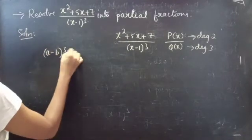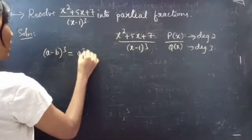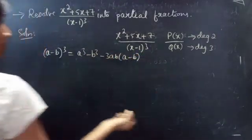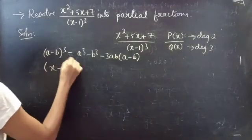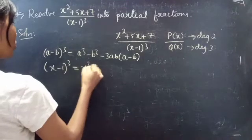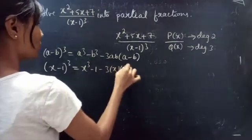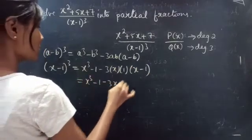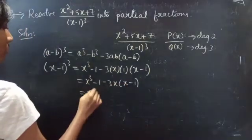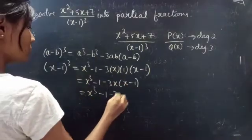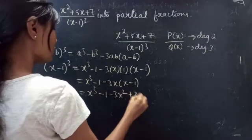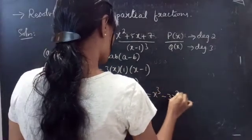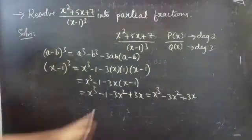If you want, you can check using the formula (a − b)³ = a³ − b³ − 3ab(a − b). So (x − 1)³ = x³ − 1 − 3x·1·(x − 1), which equals x³ − 1 − 3x² + 3x, giving x³ − 3x² + 3x − 1.